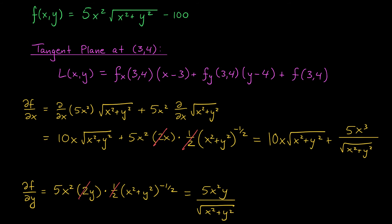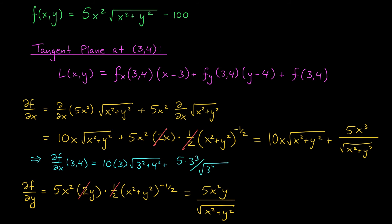Our last job is to plug in the point (3, 4) to both derivatives. Plugging into the first derivative: ∂F/∂X at (3,4) is 10 times 3 times √(3²+4²) plus 5 times 3³ divided by √(3²+4²). This really isn't as bad as it looks — 3²+4² is 25, so the square root is 5. That gives us 30 times 5 plus the 5's cancel, leaving just 3³. So that's 150 plus 27, which is 177. And ∂F/∂Y at (3,4) is equal to 36.